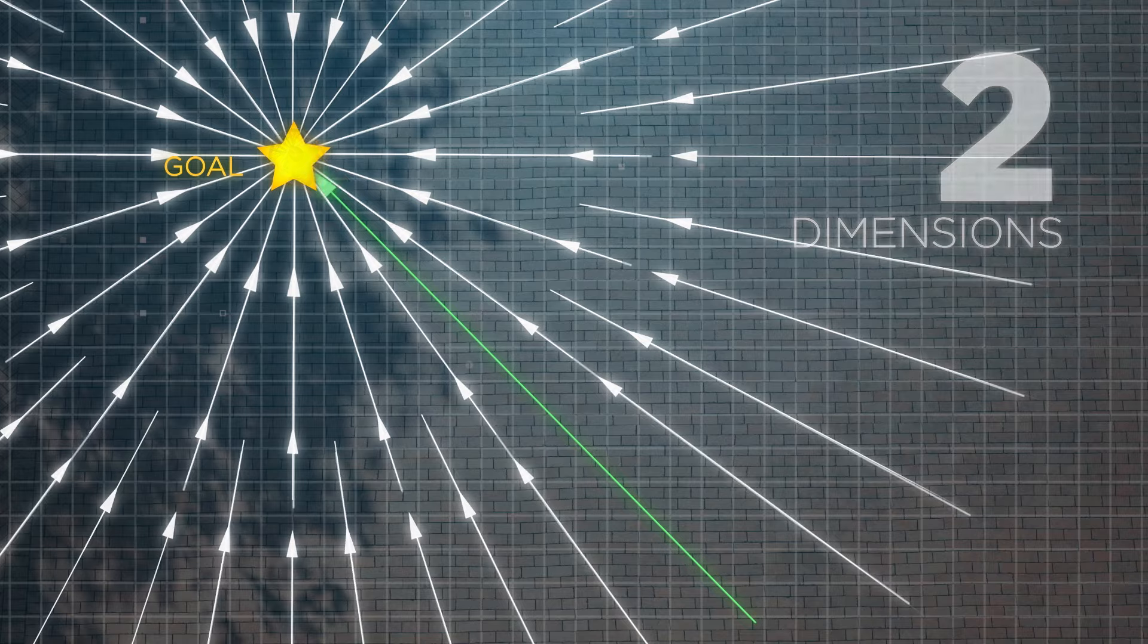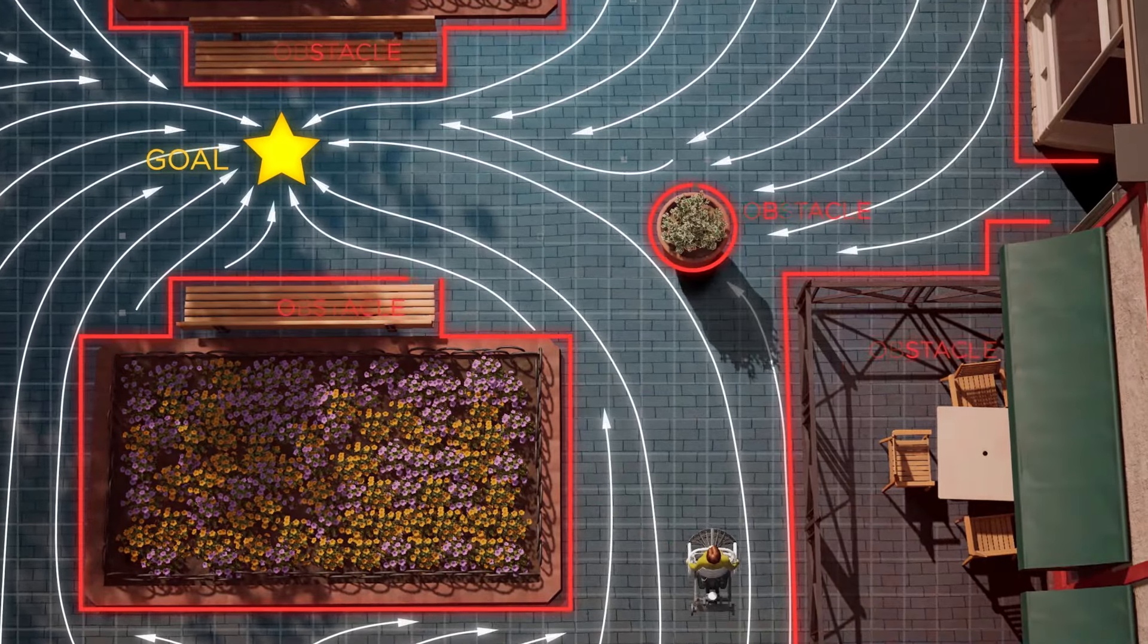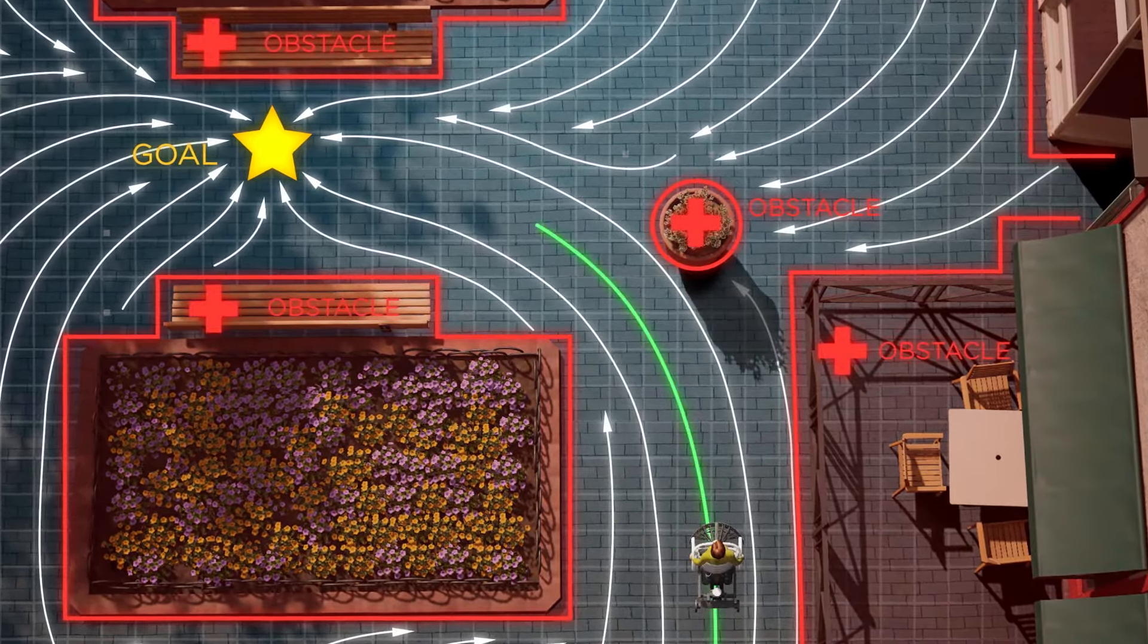One of the important developments of SAR is dynamical system-based control. A dynamical system is a map of how the robot should move in space. Robots are programmed to follow the lines of this map.